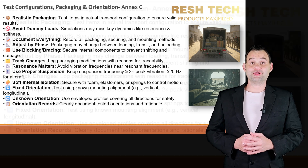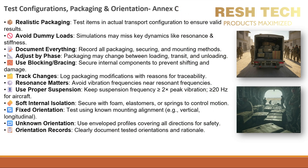Key factors for transportation simulation include test item configuration, including realistic packaging, which allows for accurate simulation. Always test items in the actual transportation configuration using the exact packaging method to ensure realistic vibration response. Avoid simulated items — dummy loads or simulations may not replicate critical parameters such as resonant frequencies, stiffnesses, damping, or internal mass distribution. Documentation is important: maintain detailed records of exact configurations tested, including internal securing methods, external packaging materials, and mounting specifics.